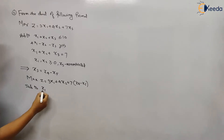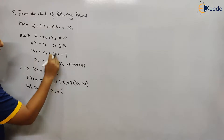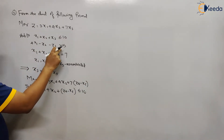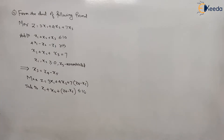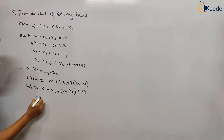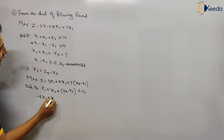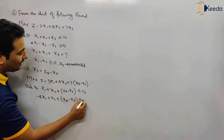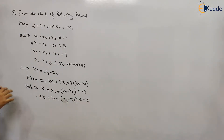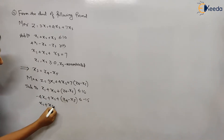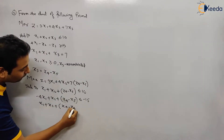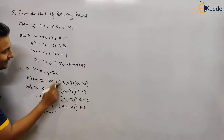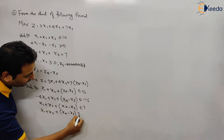Subject to — let us first complete our primal then convert it into dual. The constraint with x3 becomes x4 minus x5. The constraint that is greater-than-equal-to needs to be multiplied by minus one to convert it into less-than-equal-to, giving: minus 4x1 plus x2 plus (x4 minus x5) less-than-equal-to minus 15. The equal-to constraint is divided into two: x1 plus x2 plus (x4 minus x5) less-than-equal-to 7, and x1 plus x2 plus (x4 minus x5) greater-than-equal-to 7.